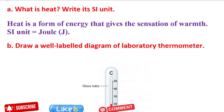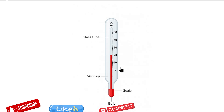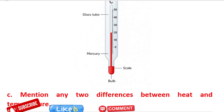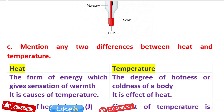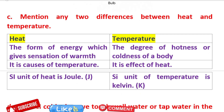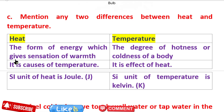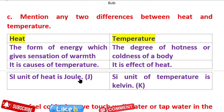Question 2: Draw a labelled diagram of a laboratory thermometer. The laboratory thermometer uses mercury. Question 3: Mention any two differences between heat and temperature. Heat is the form of energy which gives the sensation of warmth; temperature is the degree of hotness or coldness of the body. Heat is the cause; temperature is the effect. The SI unit of heat is Joule, while the SI unit of temperature is Kelvin.